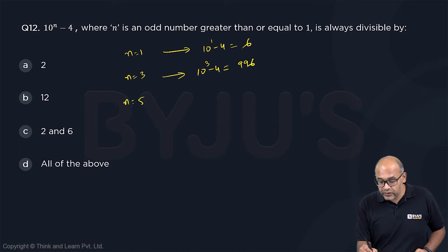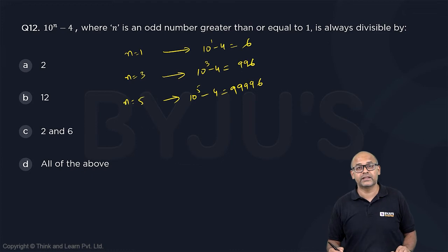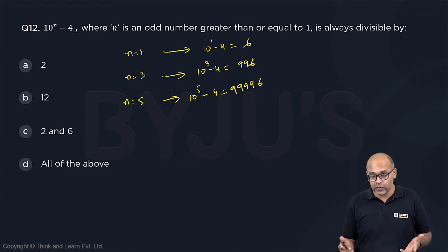If n equals 5 you will get this as 10 power 5 minus 4 which is 99,996, okay 1 lakh minus 4 and so on and so forth.